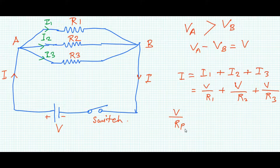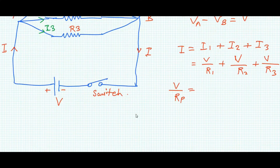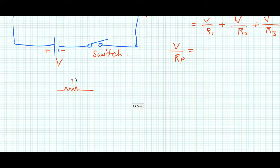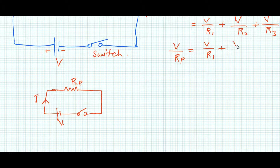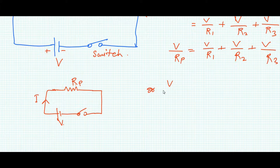where Rp is the equivalent resistance replacing all three resistors. We call it the parallel equivalent resistance of R1, R2, and R3. The total current is represented by the total potential difference divided by the equivalent resistance. So current I equals V/Rp. Therefore we can write: V/R1 + V/R2 + V/R3 = V/Rp.